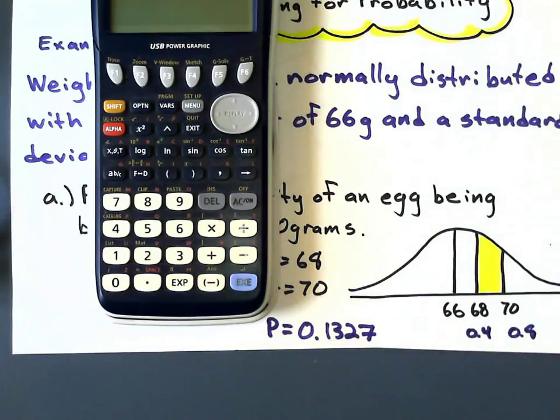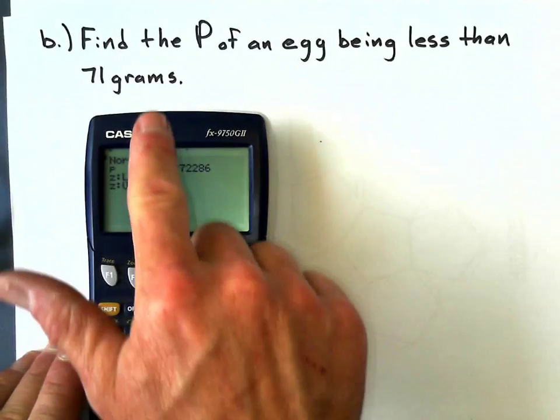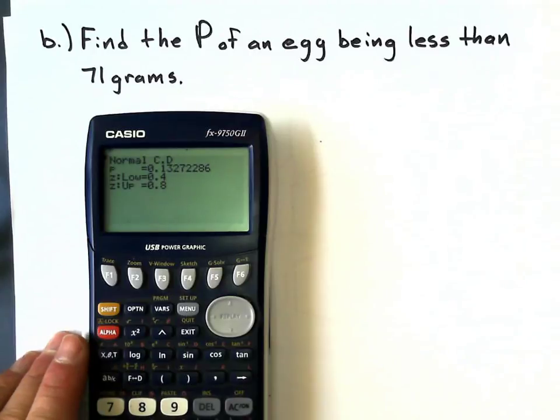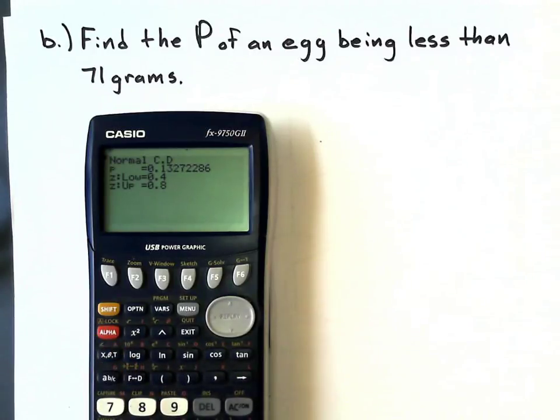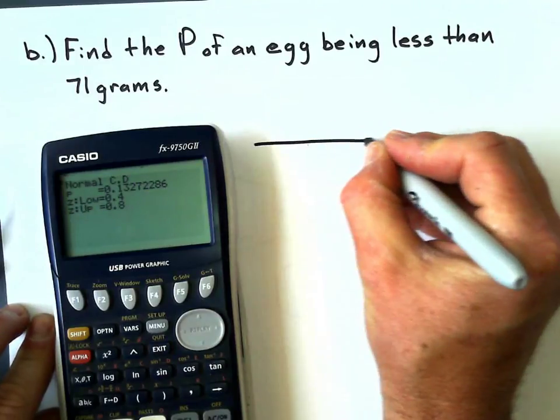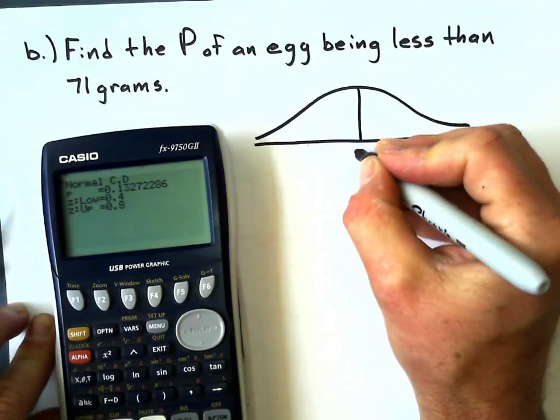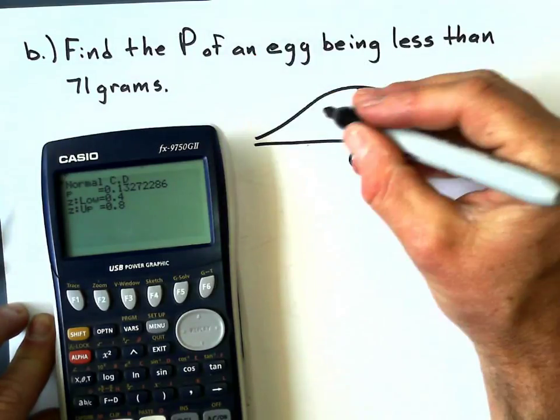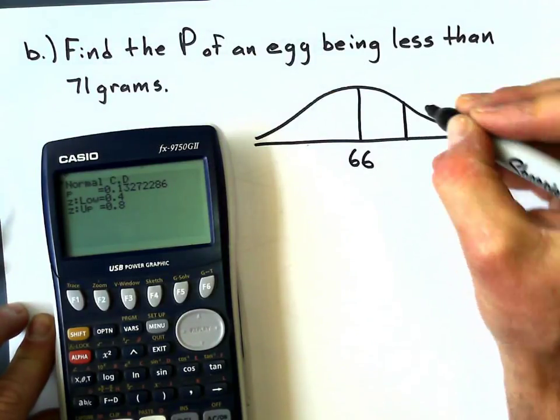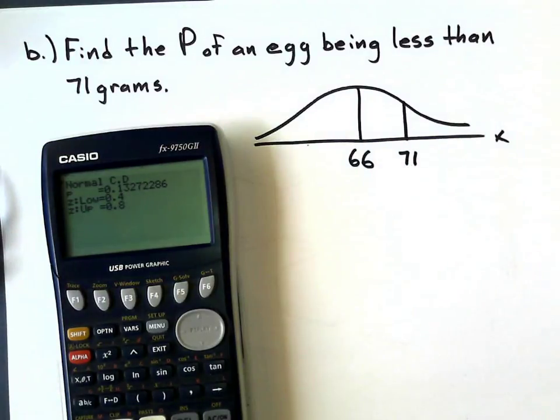Let's look at another problem. With the same mean and standard deviation as the previous problem, find the probability of an egg being less than 71 grams. Let's take a look at the picture here. Less than 71 grams: draw my normal curve, my mean is still 66, 71 to the right of the mean somewhere over here, and everything less than 71 is going to be shaded to the left like that.